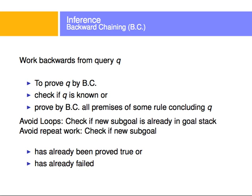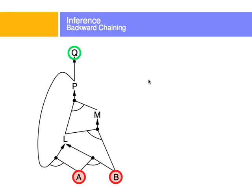Now let's look at backward chaining. We work backwards from a query and prove it by backward chaining. We look at a rule like P implies Q — Q is my query. I will backward chain to P. I don't know what P is, so I backward chain P, and so on until I find something that is true, then recursively evaluate that and move back up. I avoid loops by checking that the new subgoal is already in the goal stack, and I check if something has already been proved true or has already failed.